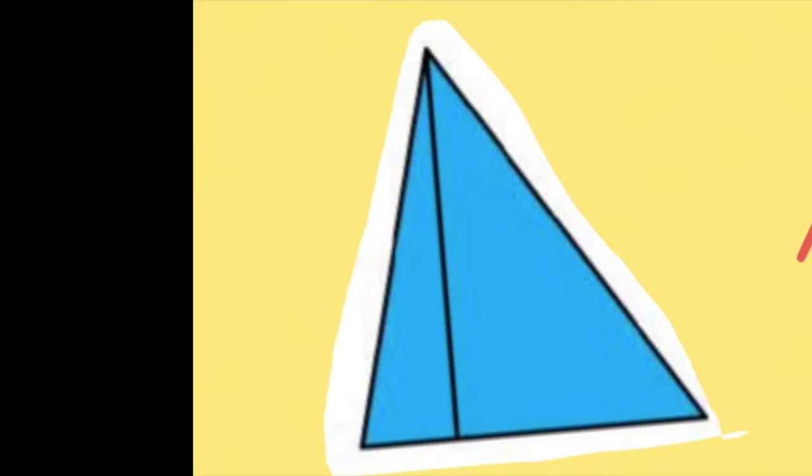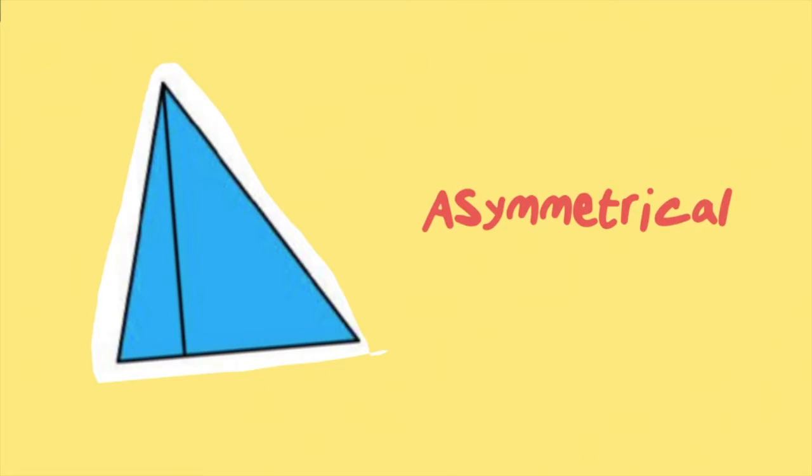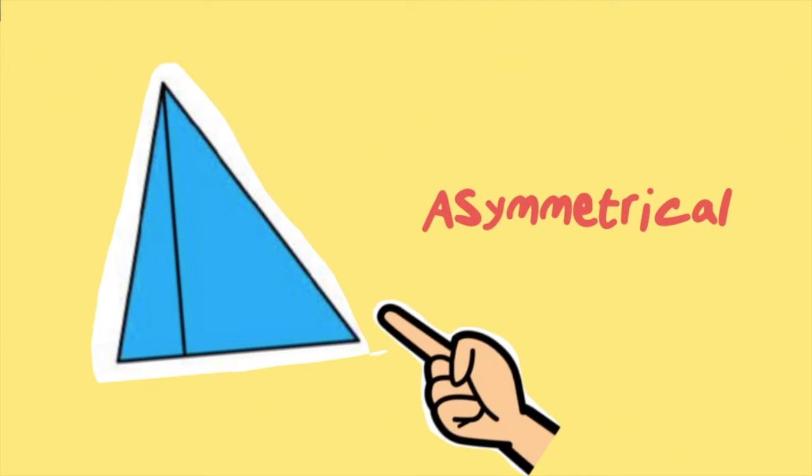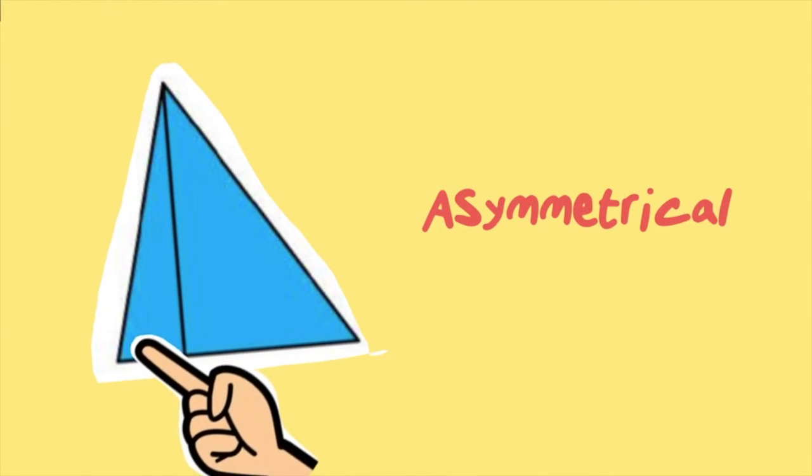If I was to look at this triangle here, I cannot fold this in half and it'd be the exact same on both sides. So this we call asymmetrical. We call it symmetrical if we can do it in half and asymmetrical if we can't. As you can see on this side, it is much larger than that side. So it is asymmetrical.